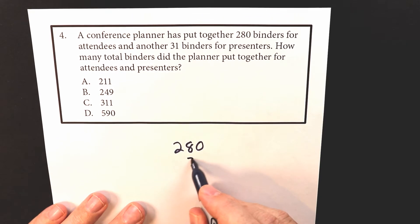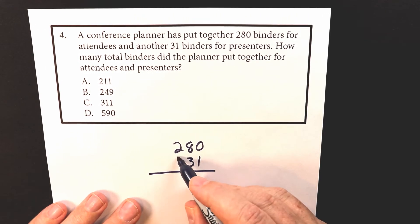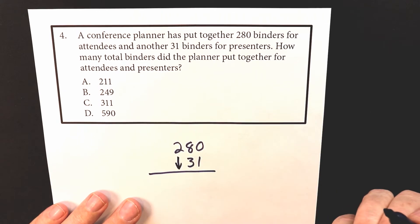And then the bottom is 31. And the reason I do that is I want to keep my columns nice and straight. And I'll even put a little arrow over here just to go down.